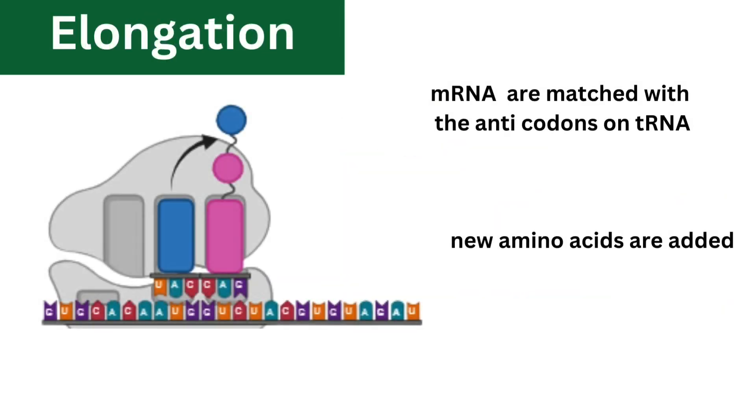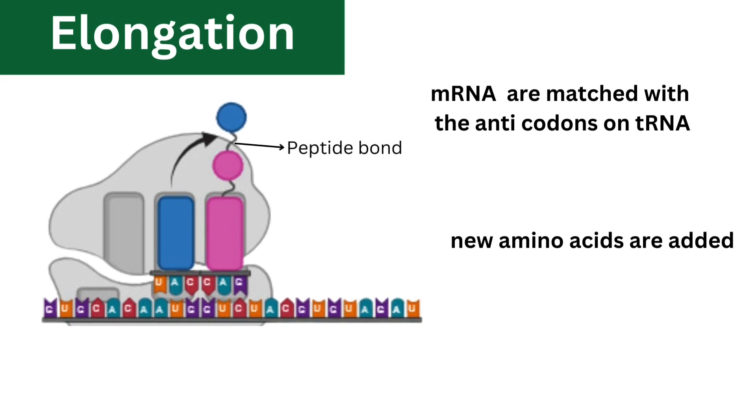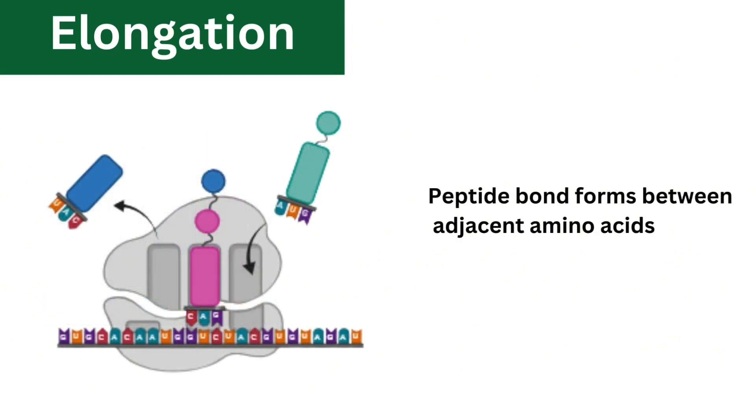When codons on mRNA are matched with the anticodon on tRNA, new amino acids are added. Peptide bonds form between adjacent amino acids, which is catalyzed by the ribosomes, leading to the elongation of the polypeptide chain.